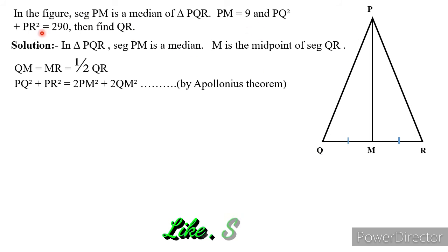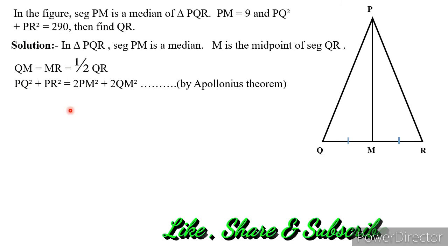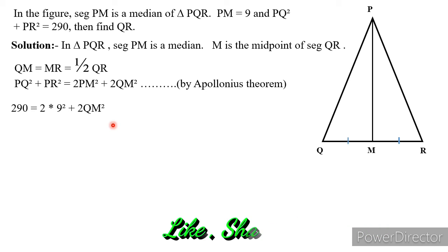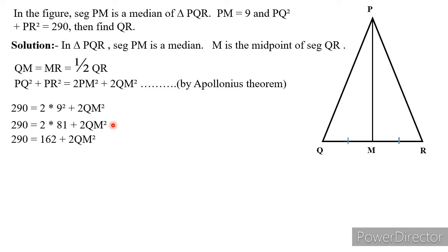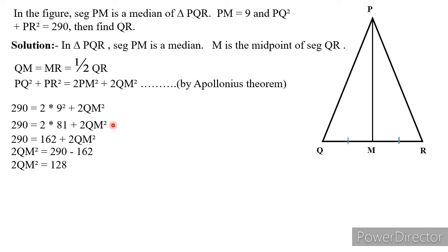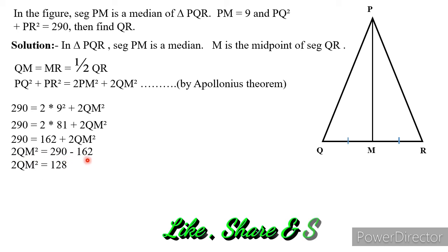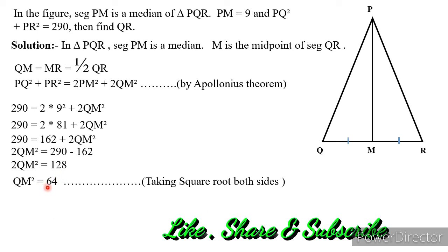We are given PQ² + PR² = 290 and PM = 9. Putting these values: 290 = 2·(9²) + 2·QM² = 162 + 2·QM². So 2·QM² = 290 − 162 = 128, giving QM² = 64, and therefore QM = 8.